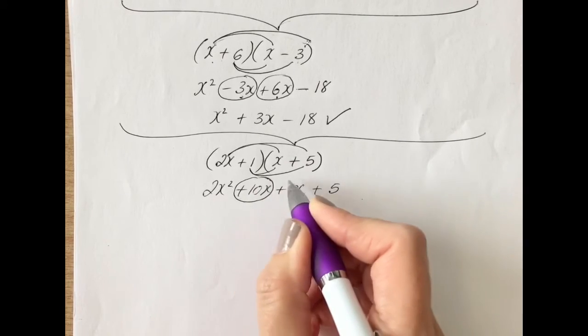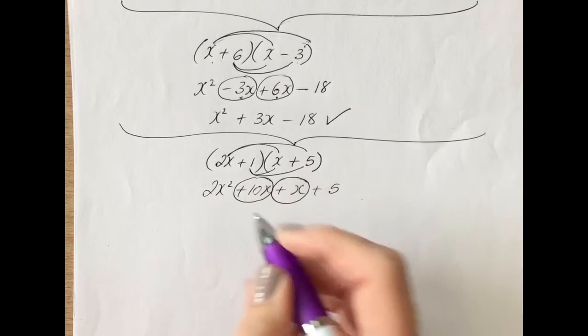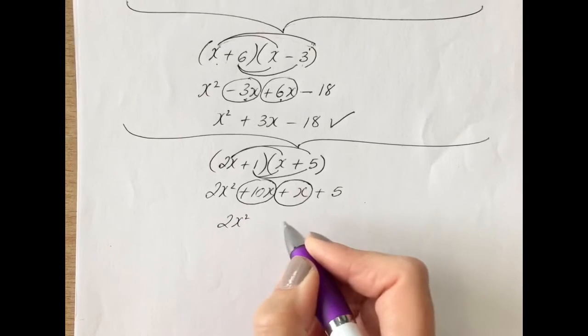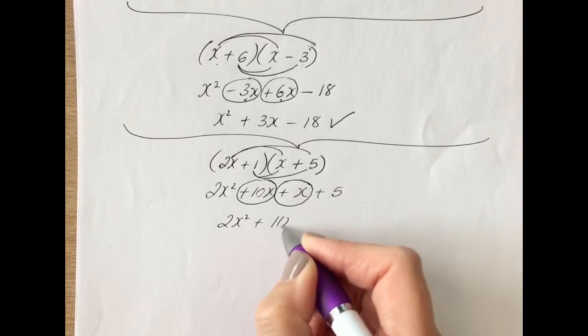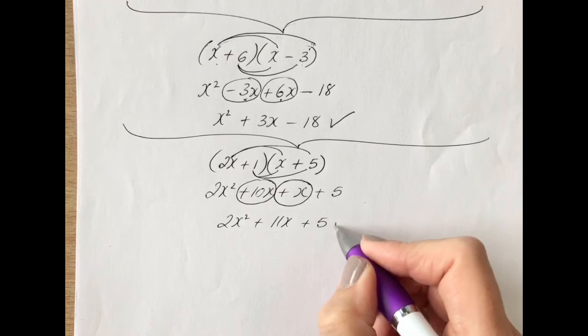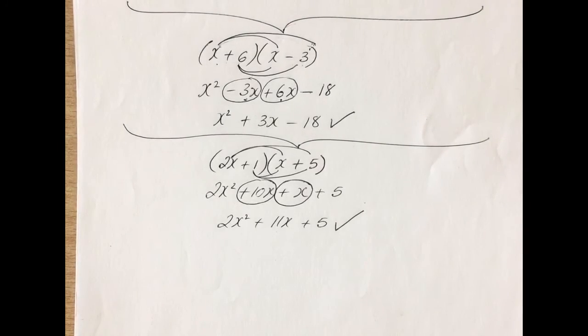Adding together your middle terms, you have 10x add x or 10x add 1x, which gives you 11x in total. So 2x squared plus 11x plus 5 is the answer.